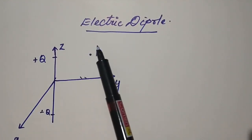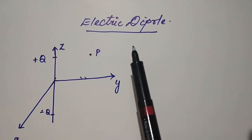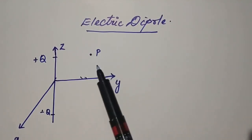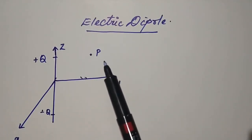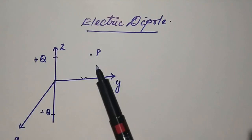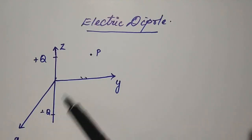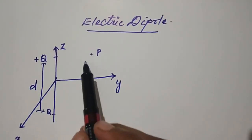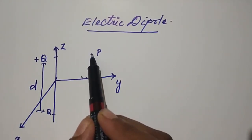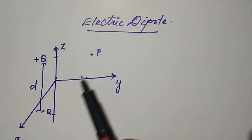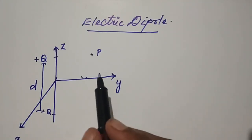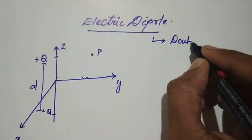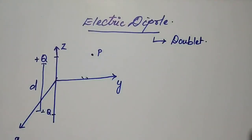Today we'll be seeing the topic of electric dipole, which you are a bit familiar with from your 10-12 standards. Let us see it briefly in relation with electromagnetic fields. The term dipole refers to two equal and opposite charges separated by a small distance d. This dipole is also called a doublet because of its two charges of opposite direction.